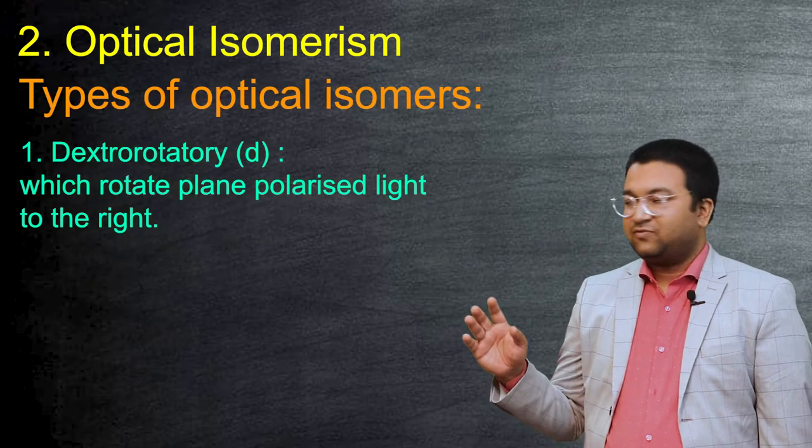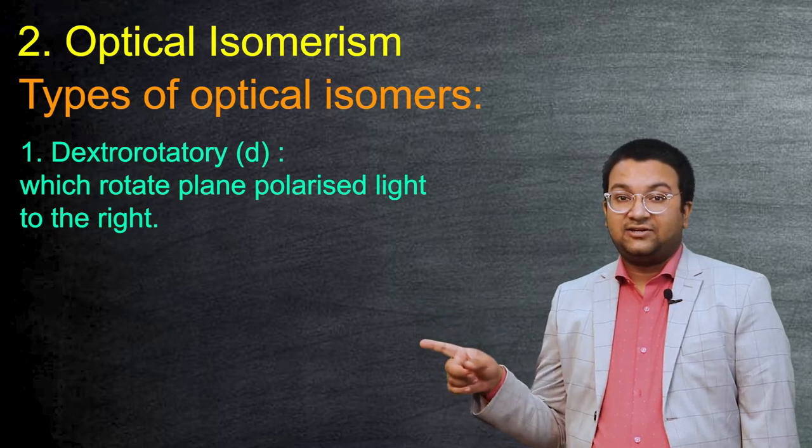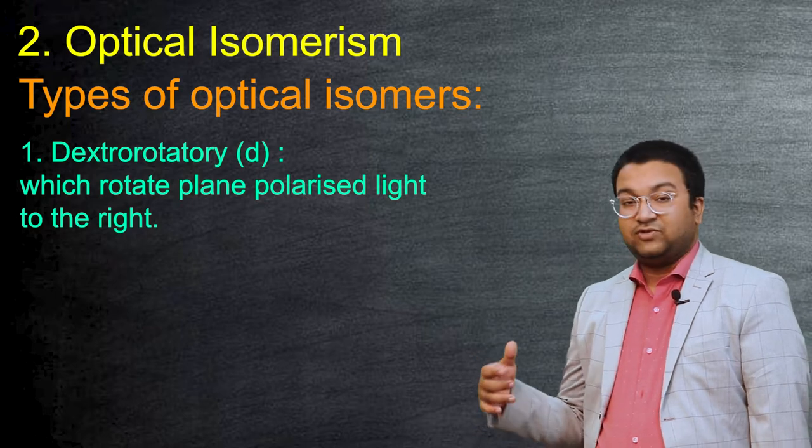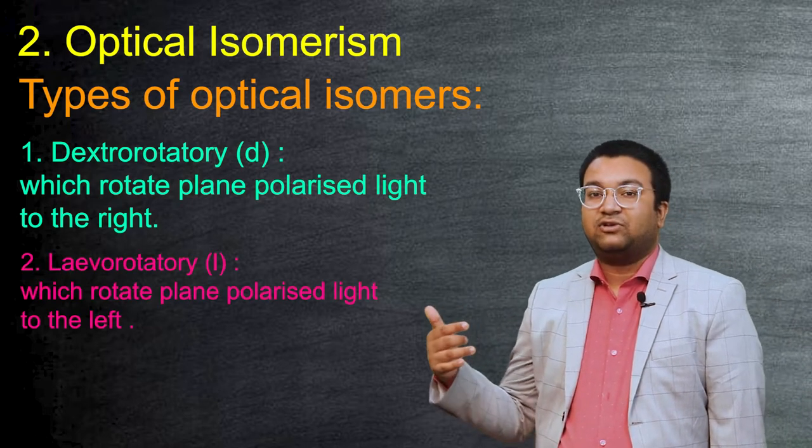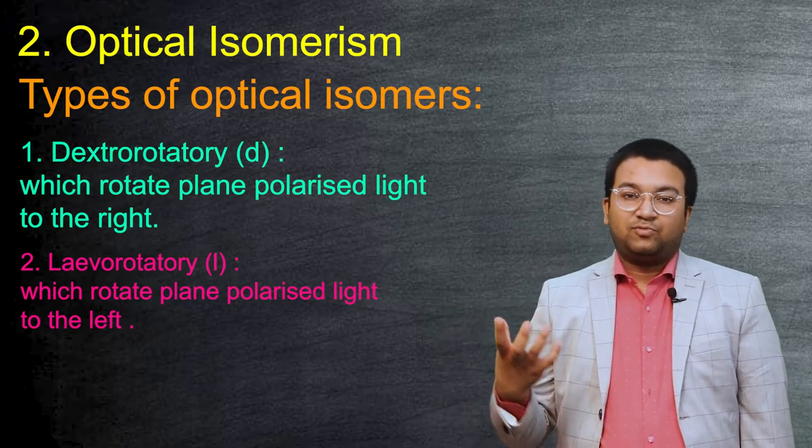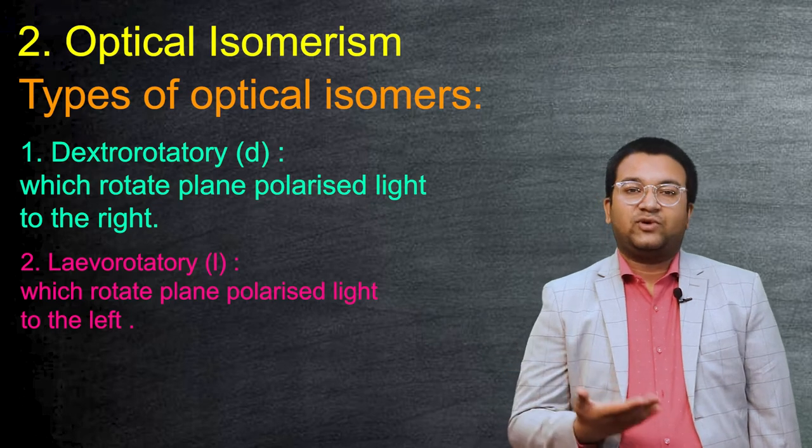Optical isomerism can be of two types. One of those compounds will be rotating the plane polarized light to the right, so we call it dextrorotatory. The other one, which is the mirror image, will rotate to the left, so we call it the levorotatory compound. So both optical isomers will exist as dextro and levo types of compounds.